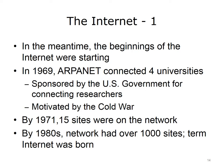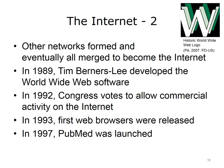In the meantime, the first steps in developing the Internet were happening. In 1969, the Advanced Research Projects Agency Network, or ARPANET, connected four universities. It was a project sponsored by the U.S. government for connecting researchers. By 1971, there were 15 sites on the network, and by the 1980s, there were over 1,000 sites on the network. That's when the term Internet actually started being used instead of ARPANET. Other networks were formed at the same time and eventually all merged together to become what we know today as the Internet.